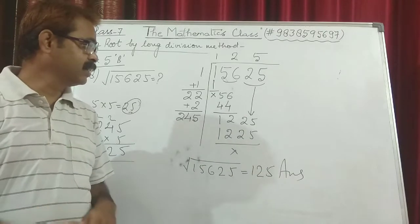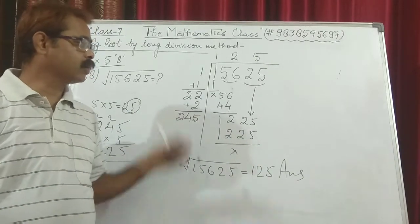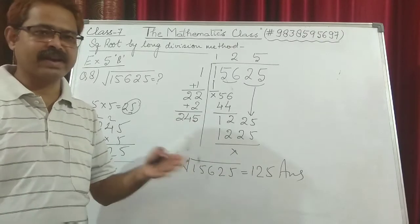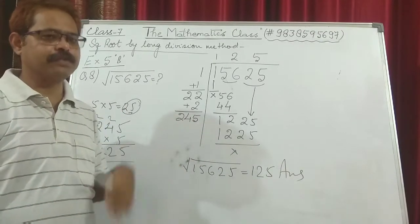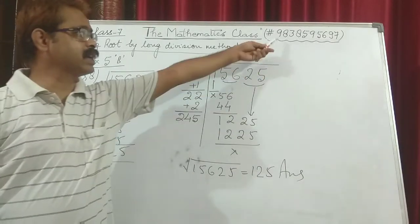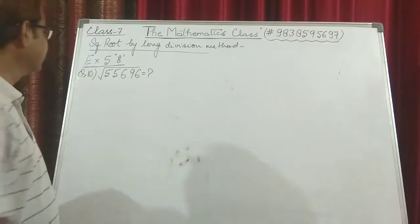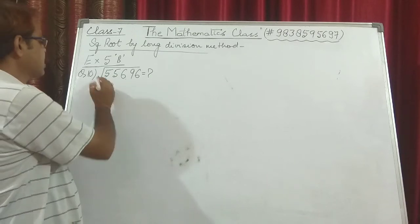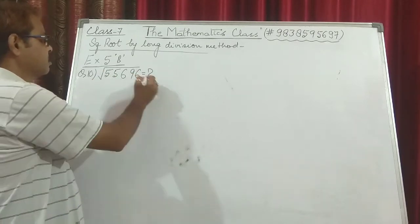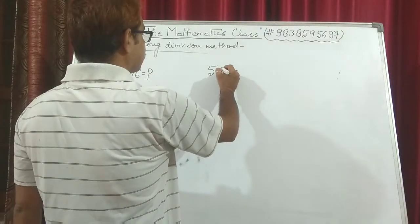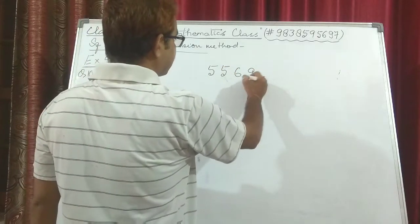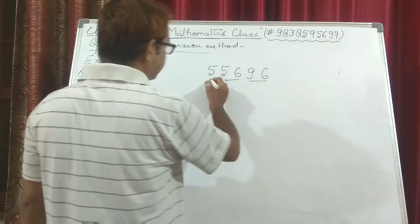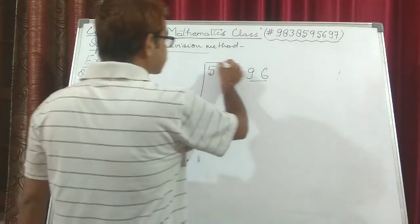Now we move on to question number 10. Questions 2, 4, 6, 8, and 10 will be in your fair notebook, while the leftover questions 1, 3, 5, 7, and 9 will be in your practice notebook. If you have any doubt you can comment. Question number 10: find the square root by division method of 55696. We put a root sign and a question mark — we will find the value. Moving from right to left making pairs: first pair, second pair, and 5 is left alone.